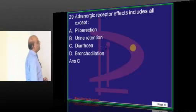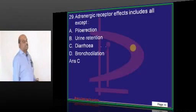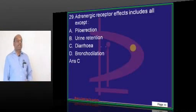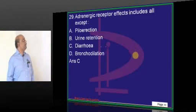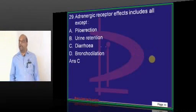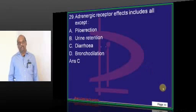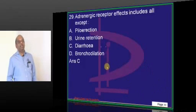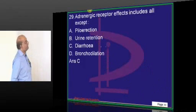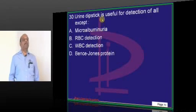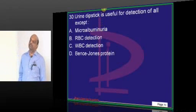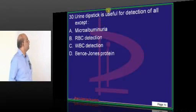Adrenergic receptor stimulation typically causes bronchodilation, urine retention, and piloerection — these are all effects of adrenergic receptor stimulation.